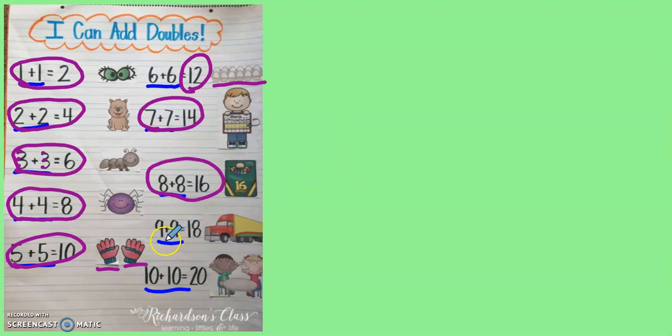Two more to go. Nine plus nine equals eighteen. Wow, that's a big number and that one's a little tricky to remember. So make sure you practice that one at home.